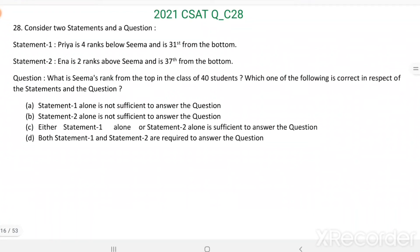Question number 28. Consider two statements and a question. Statement 1: Priya is 4 ranks below SEMA and is 31st from the bottom. Statement 2: Ina is 2 ranks above SEMA and is 37th from the bottom. Question: What is SEMA's rank from the top in the class of 40 students? Which one of the following is correct in respect of the statements and the question?